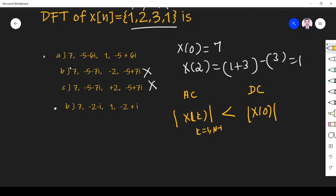So the magnitude of DC coefficient should be greater in DFT. Here you see, what is the magnitude of first option? 7, because it is a number, just a magnitude 7. But we can see the magnitude of second coefficient. What is the magnitude? 5 squared plus 6 squared is 36 plus 25 is 61. Surely it will be greater than 7.